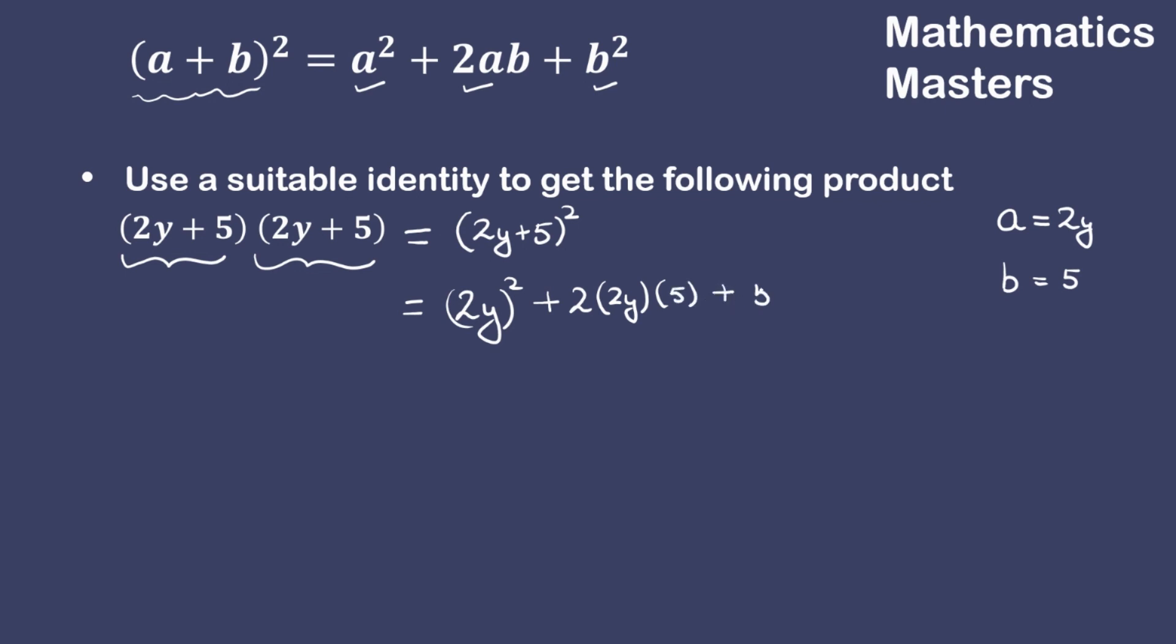Plus the square of the second term. Now let us solve: the square of 2y means the square of 2 which is 4, and the square of y which is y squared. 5 times 2 is 10, 10 times 2 is 20.